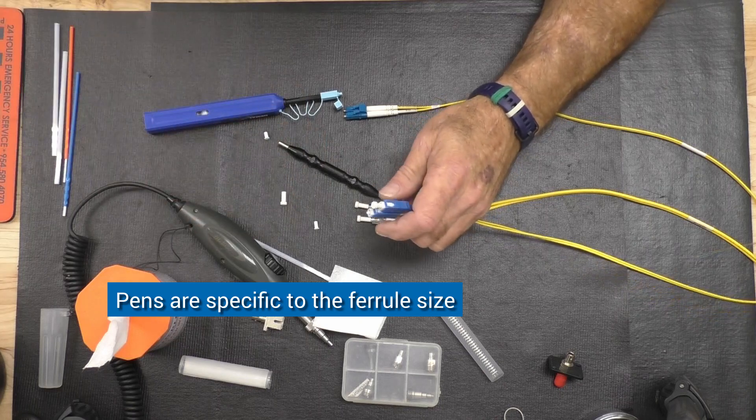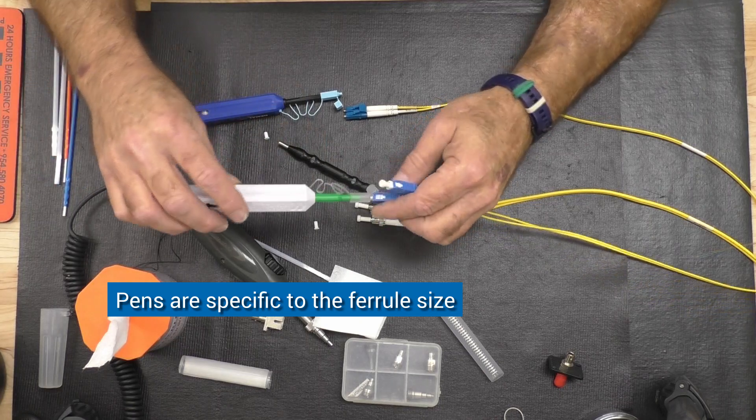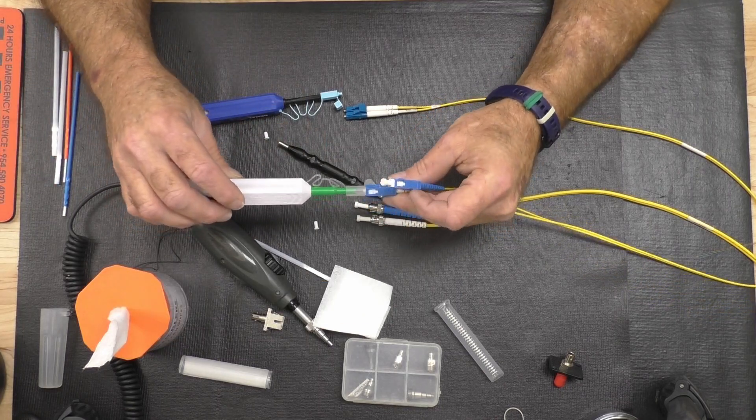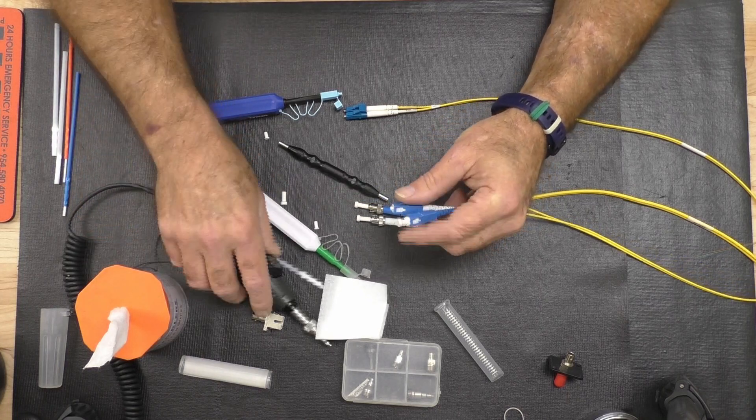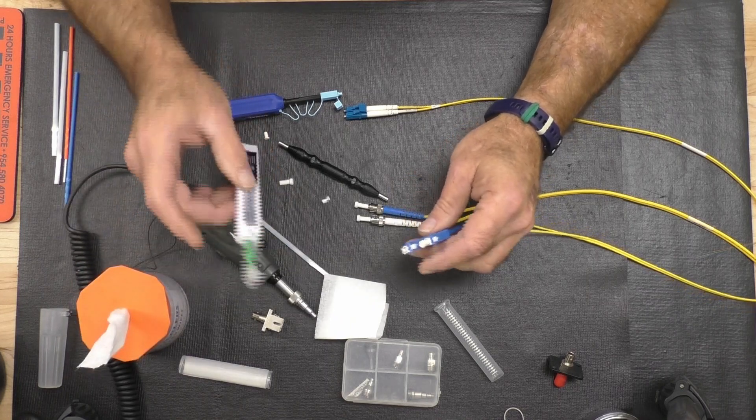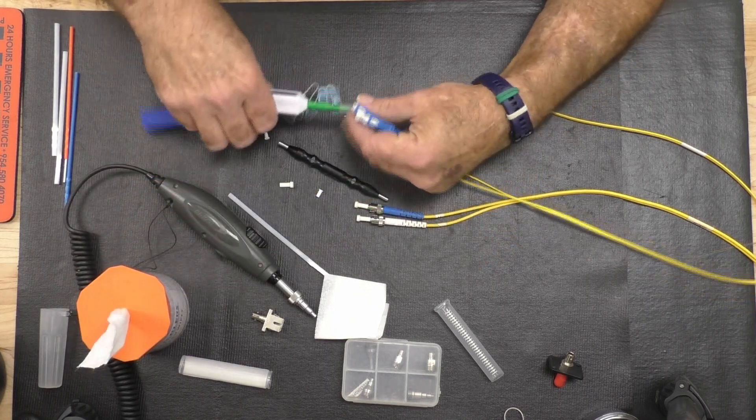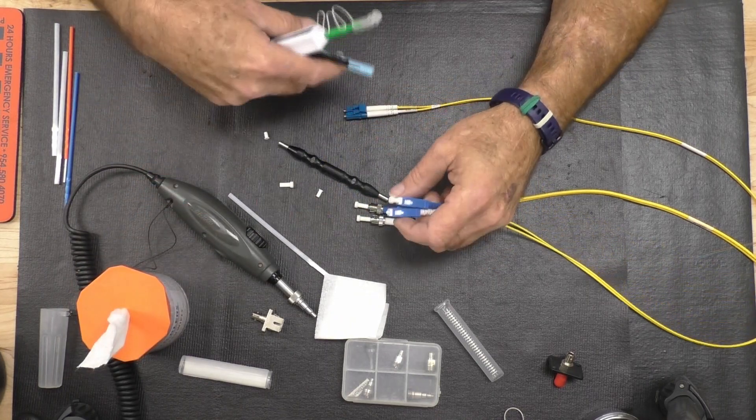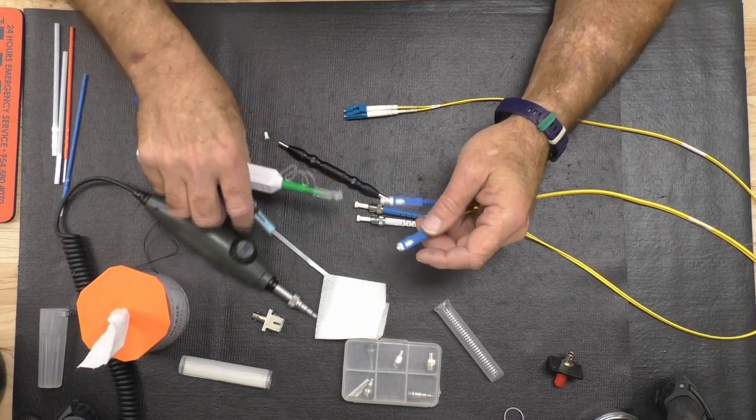The pens are specific to the size, so you'd have a 1.25 for the LC and a 2.5 for the SC and ST. Same approach, same thing—visually inspect them. These are a dry-only application, so you have to own one per size of connector: LCs, STs, and SCs.